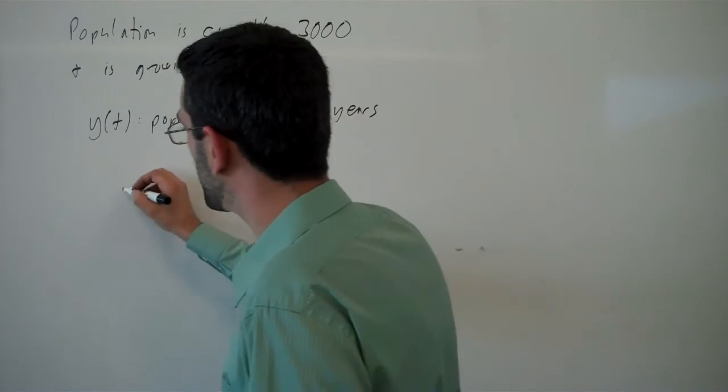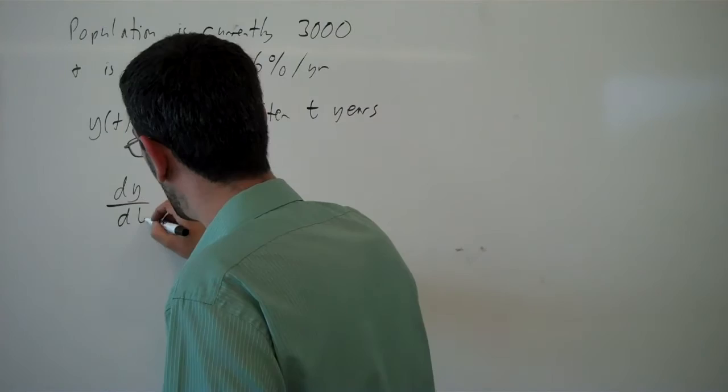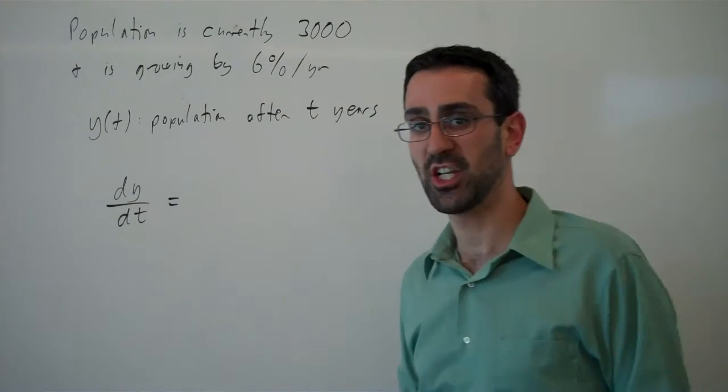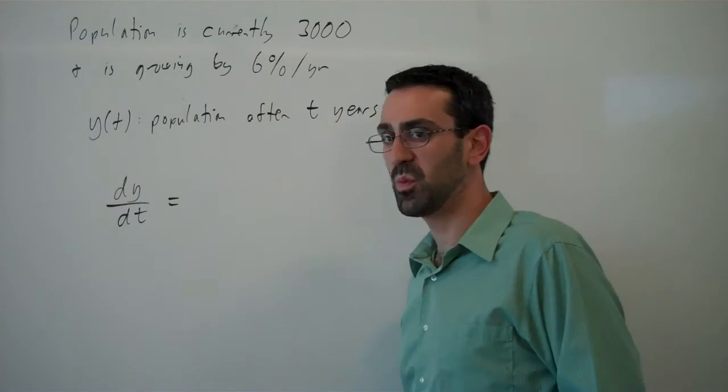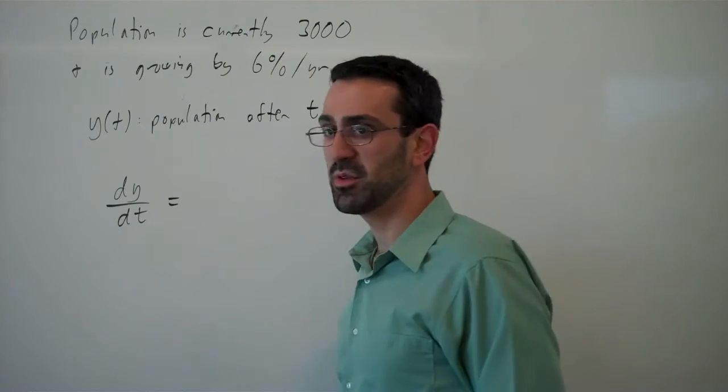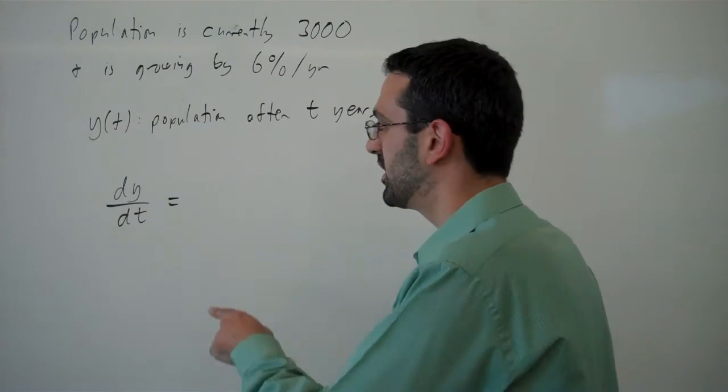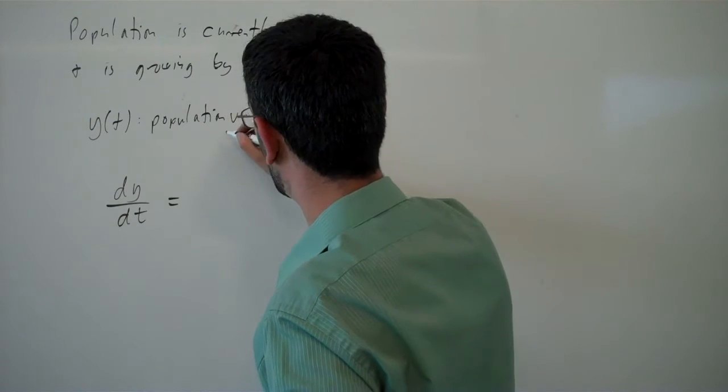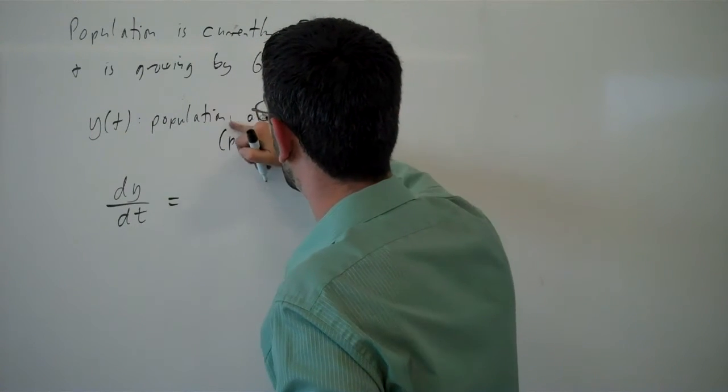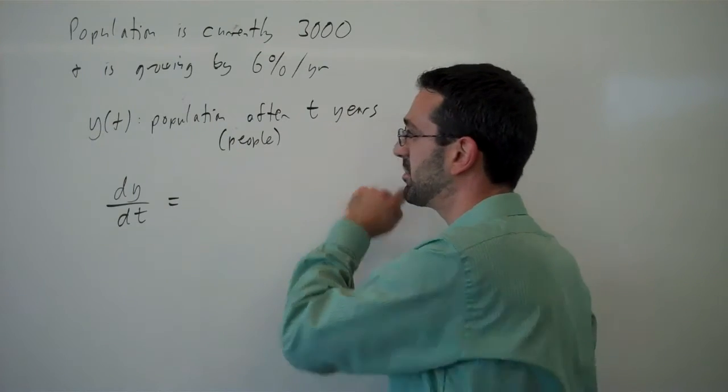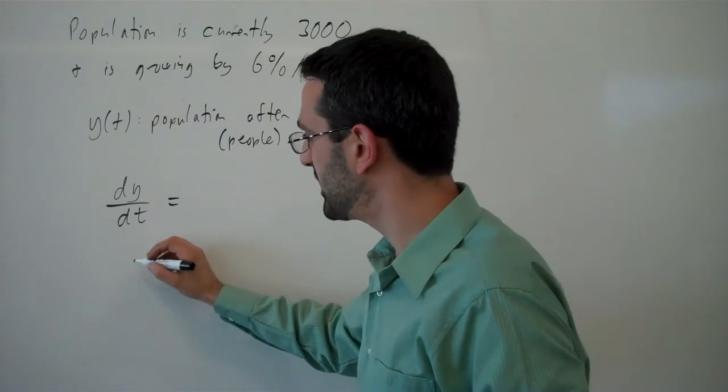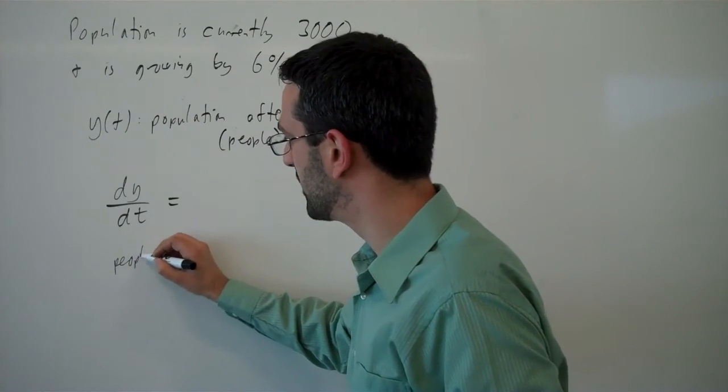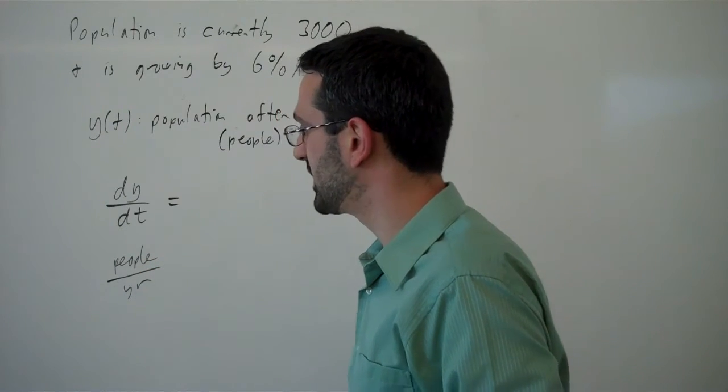What we're really interested in is what do we know about how y is changing? What do we know about dy/dt? Let's think about the units on dy/dt. y is the population, measured in people, and t is measured in years. So dy/dt would have units of people per year.